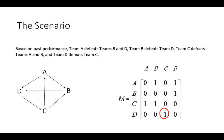Similarly, this element here, element 4,3, indicates that team D defeats team C. So that is that relationship. And each of the arrows in the diagram is represented in the matrix.